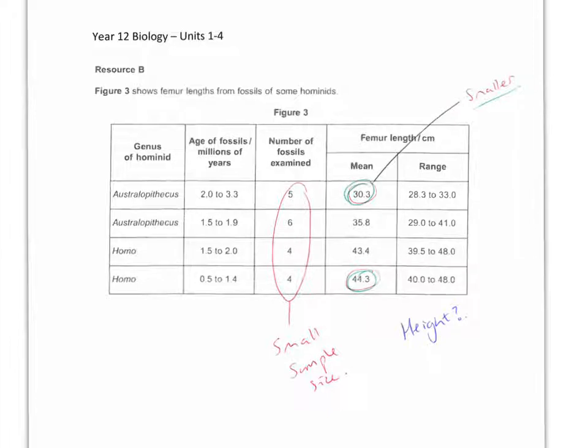In this question, evaluate: Australopithecus looks similar to modern humans. There's not really any yes points you can have for this. There's nothing to indicate that that's the case. So what things go against that they look similar to modern humans? First of all, the sample size is very, very small, so it's not representative at all.